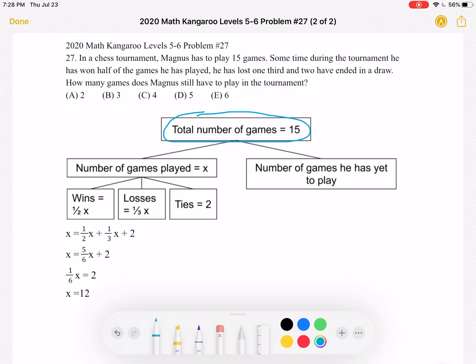Now we can divide these games into two groups. The number of games he has played, which I have written as X, and the number of games he has yet to play. Again, these two categories must add up to 15.